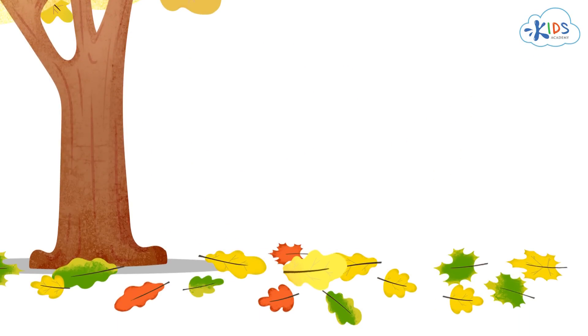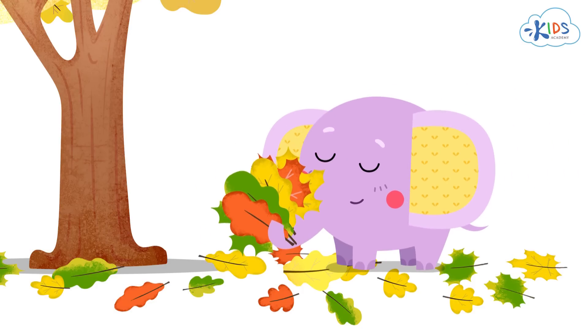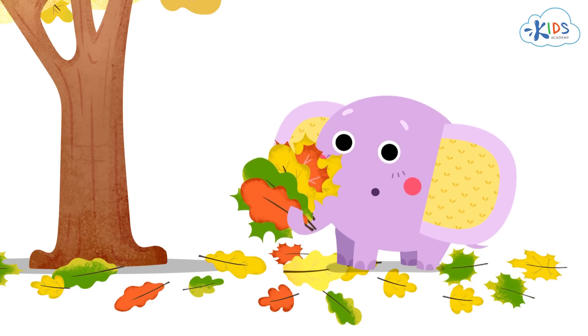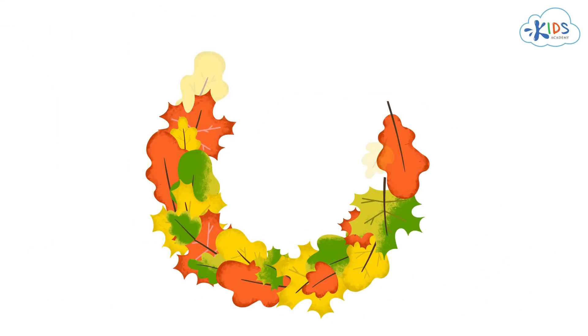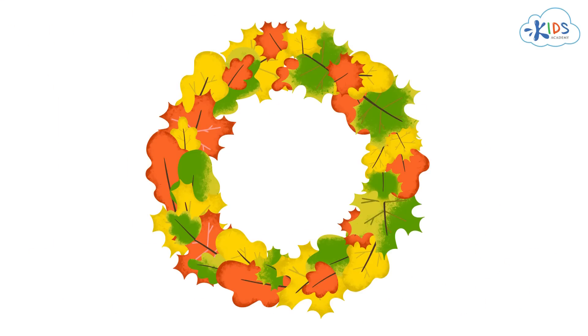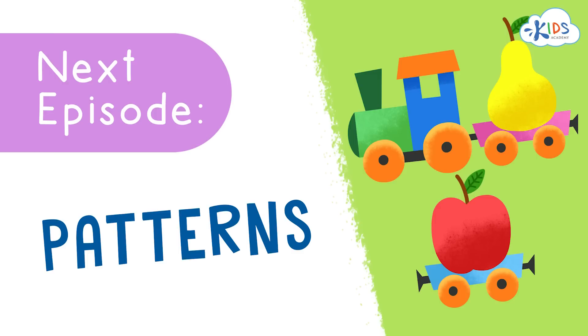Even though these leaves have fallen off, they are still very beautiful. Should we make a wreath of them and hang it on the front door? That would look very pretty — awesome idea! I'll do that! It'll be easy because I've already sorted the leaves by shape, size, and color. At our next lesson, we'll learn everything about patterns. See you soon! Bye, guys!